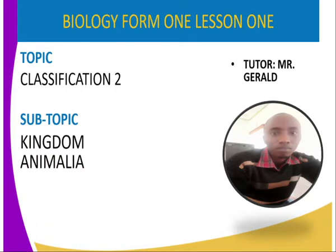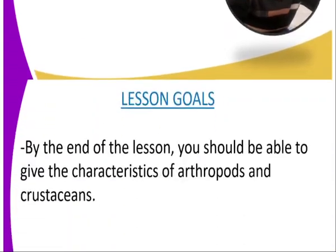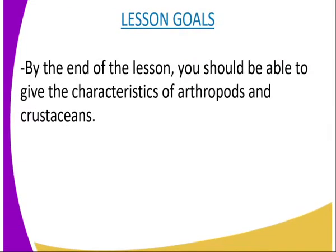Remember there are 5 kingdoms, but in this lesson we are going to look at kingdom animalia. Before we start our lesson, we can have the following lesson goals, whereby by the end of the lesson you should be able to give the characteristics of the arthropods and the crustaceans.